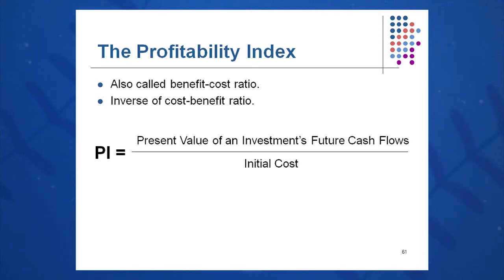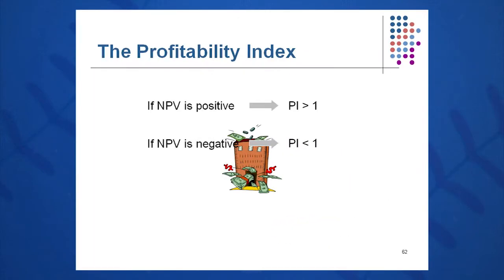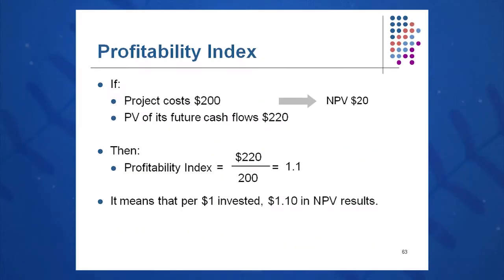It's very simple to calculate and very true to the NPV method. NPV positive means PI greater than 1; NPV negative means PI less than 1. Here's an example where my project costs $200, the present value of the cash inflows is $220, and my NPV is $20. The profitability index is the benefit-to-cost ratio: 220 divided by 200, or 1.1.